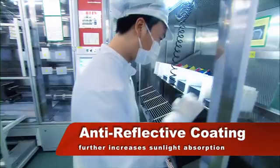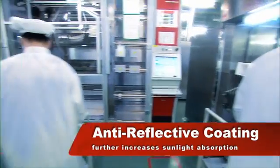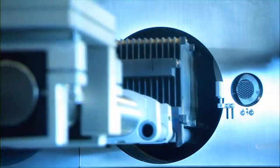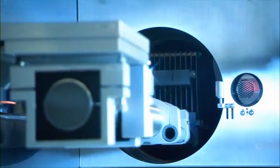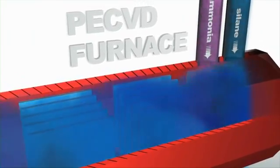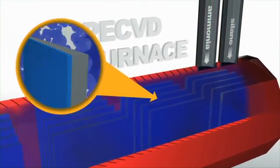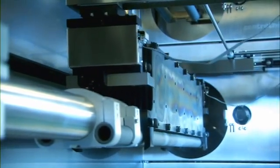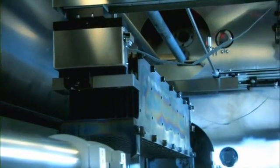In the plasma-enhanced chemical vapor deposition area, the wafers are placed in a furnace and coated with a silicon nitride anti-reflective coating. This coating further reduces reflectivity to 6%, which, combined with the texturing process, reduces the overall surface reflection to around 1% at special spectral range.